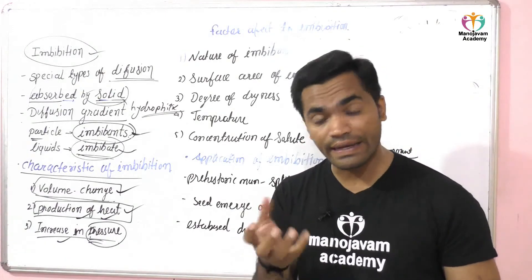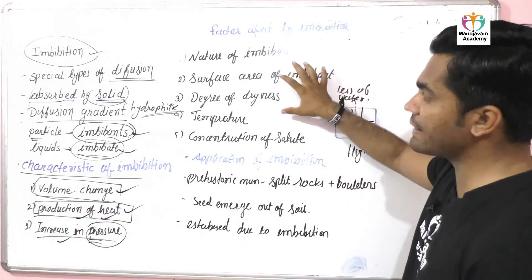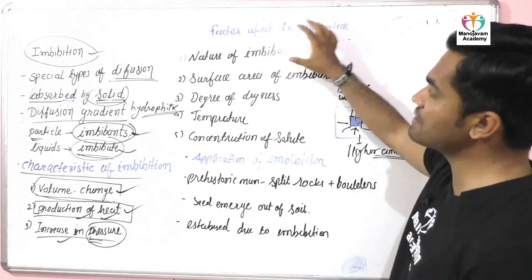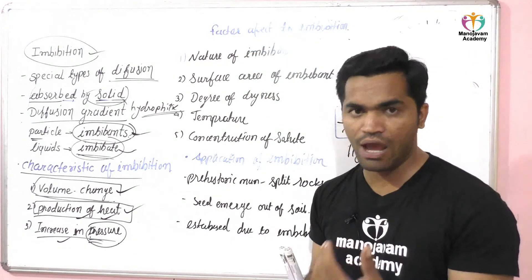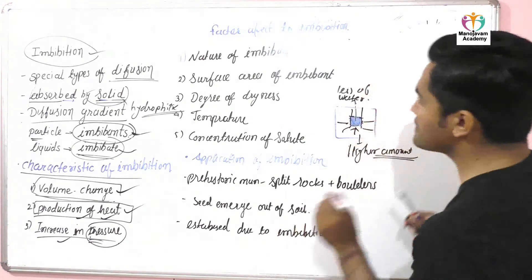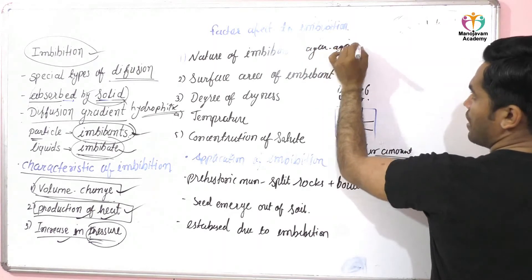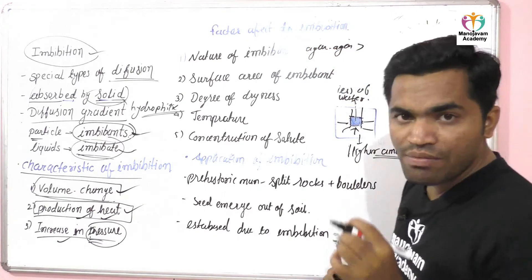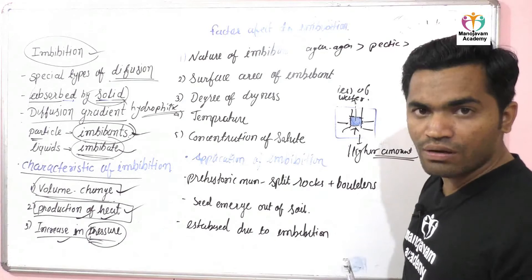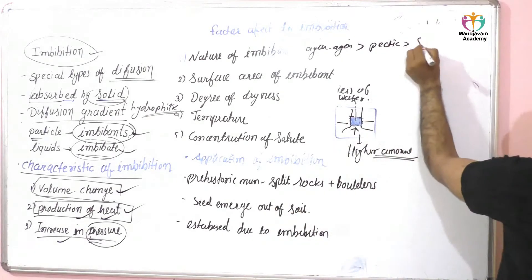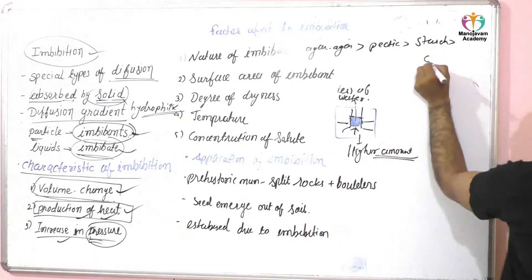Now, what are the factors that affect imbibition? The first factor is the nature of the imbibant. If the hydrophilic particle has a higher affinity, there will be a higher amount of imbibition. For example, agar-agar has a higher amount of imbibition as compared to starch.